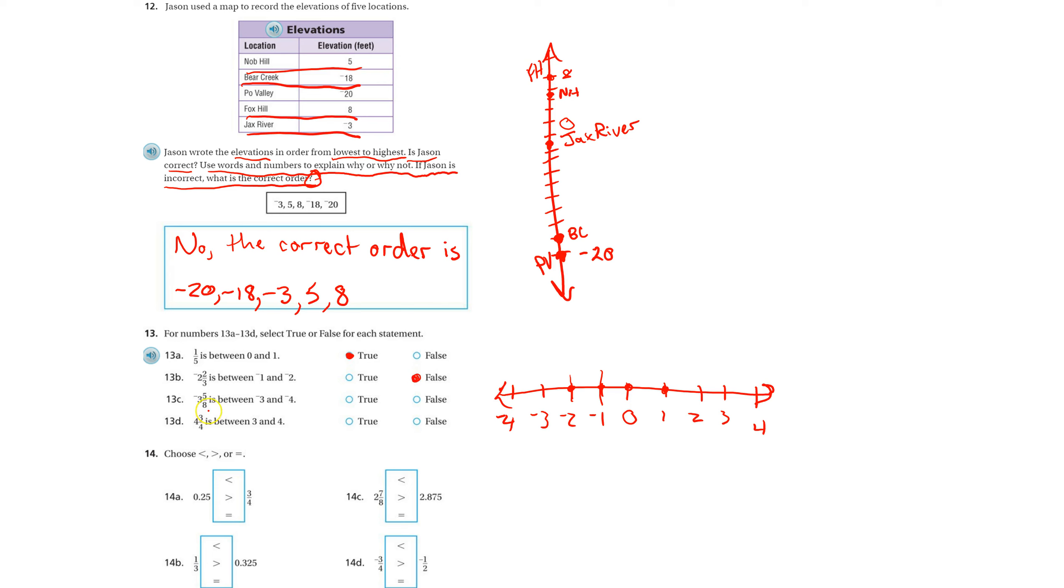Negative three and five-eighths is between negative three and negative four. Negative three and five-eighths would be negative three and some, so it's going to be right about here. Yes, it lies in between. Positive four and three-fourths between three and four. We have four and some more, so no, this is outside that range.